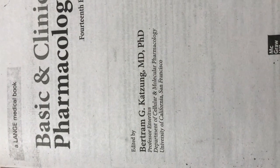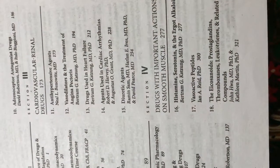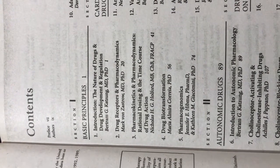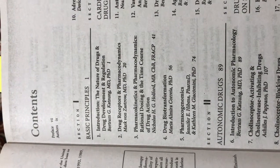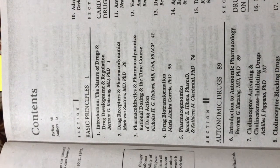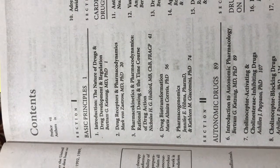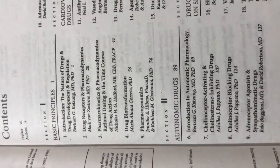This is the qualification of the editor. The book is published in cities including New York, Chicago, San Francisco, etc. On the contents page, we have firstly basic principles that involve introduction, the nature of drugs and drug development regulation. Secondly, drug receptors and pharmacodynamics. Thirdly, pharmacokinetics and pharmacodynamics. Fourth, drug biotransformation. Fifth, biopharmacogenomics.